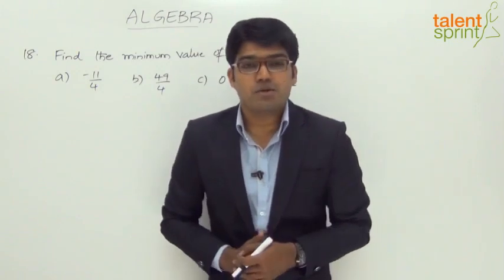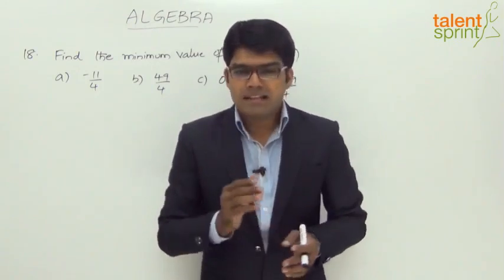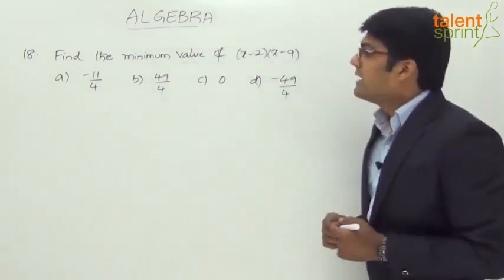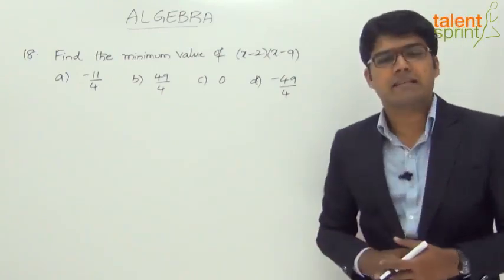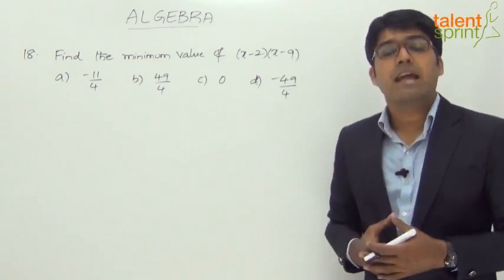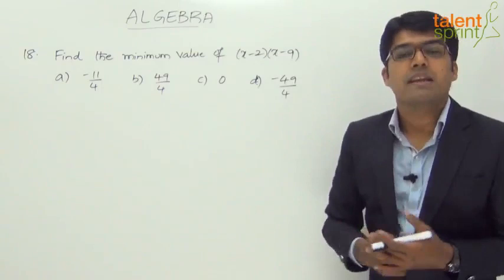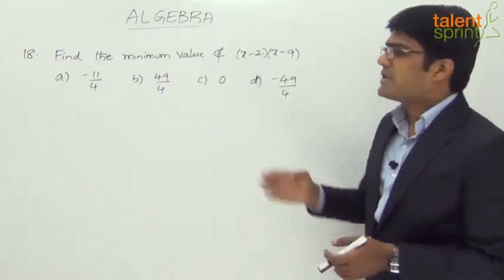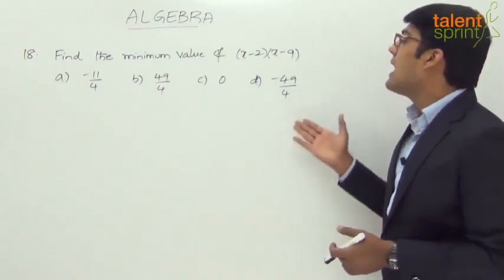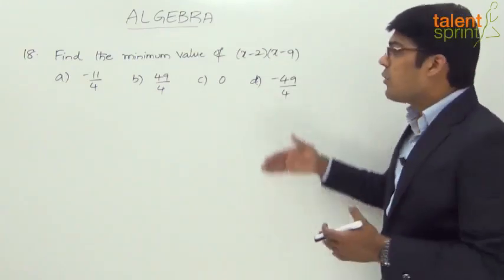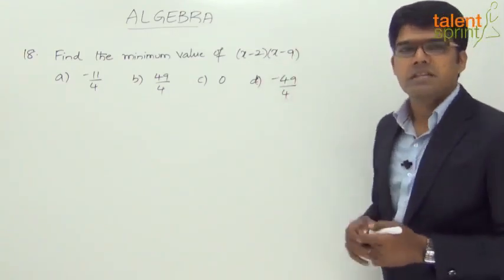Let us now take the next question from this topic of algebra, which is quite different from all the questions that we have solved so far. The question says: find the minimum value of (x-2) into (x-9). There is an expression (x-2)(x-9) and we need to find out what can be the minimum value of this expression. The answer options are minus 11 by 4, 49 by 4, 0, and minus 49 by 4. Let us see what will be the approach for answering such questions based on finding out the minimum value of the given expression.